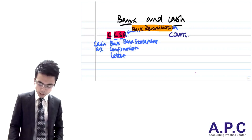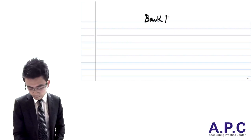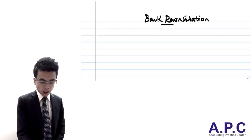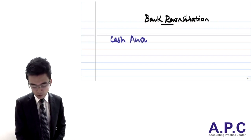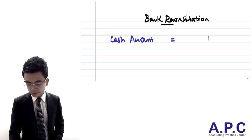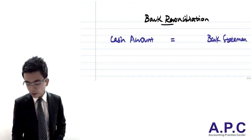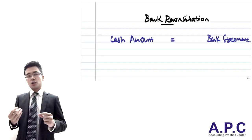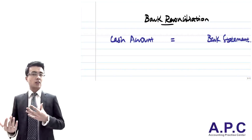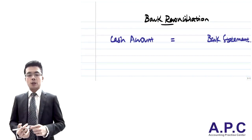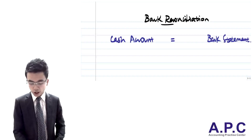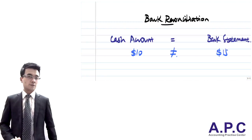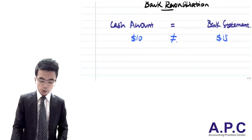Let's look at the bank reconciliation first. From your earlier studies, you'll know that bank reconciliation addresses the fact that the balance in the company's cash account is not equal to the balance on the bank statement. For example, the cash account shows $10 but the bank statement shows $15 — a difference of five. There are three reasons for such differences.